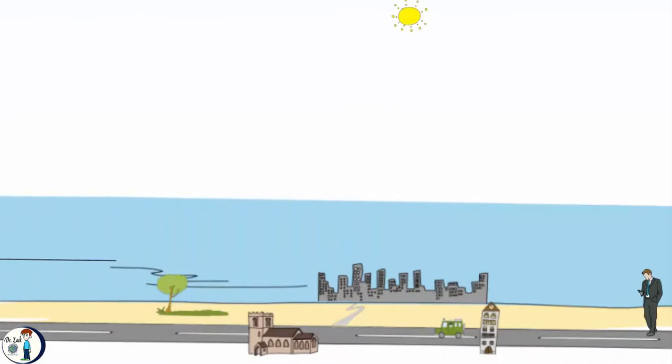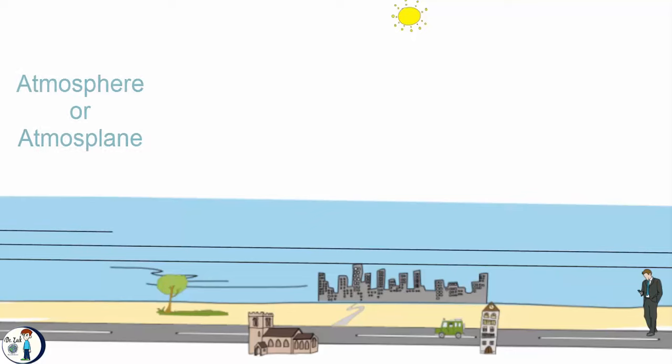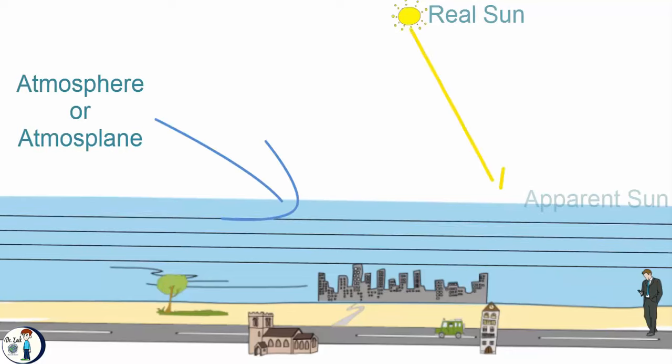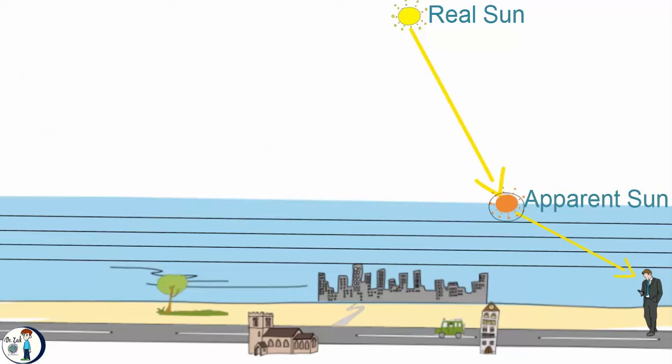Now, picture the sun is above you, and the last layer of the atmosphere or atmosplane is a lot closer to you than the sun. The refraction will happen until the last layer of the atmosplane, which goes to the ground, right? So, looking at the sun from the ground through the atmosplane can make the apparent sun appear lower instead of higher.